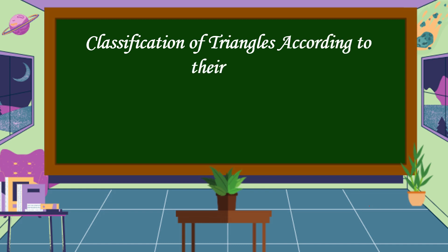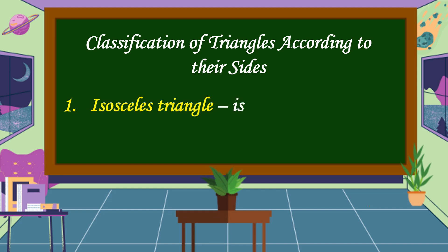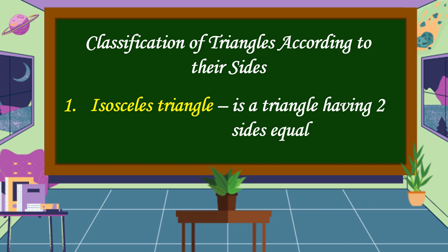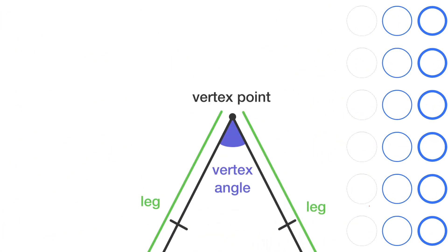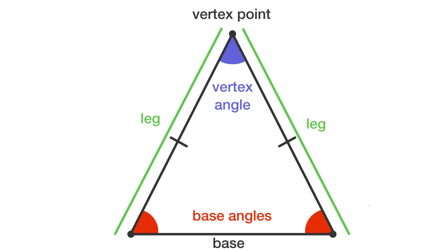We have three classifications of triangles according to their sides. The first is an isosceles triangle. An isosceles triangle is a triangle having two sides equal. This is an isosceles triangle — the two sides are equal and the two base angles are also equal.